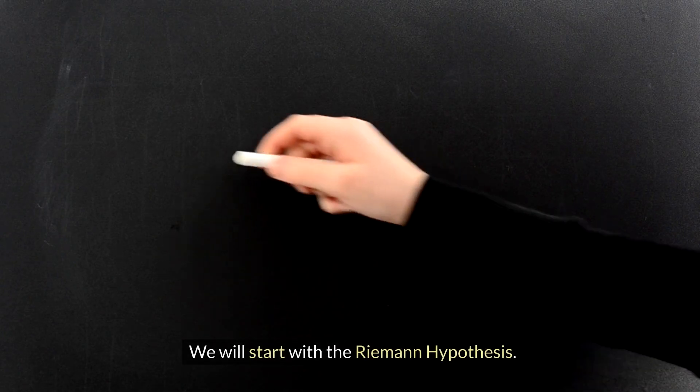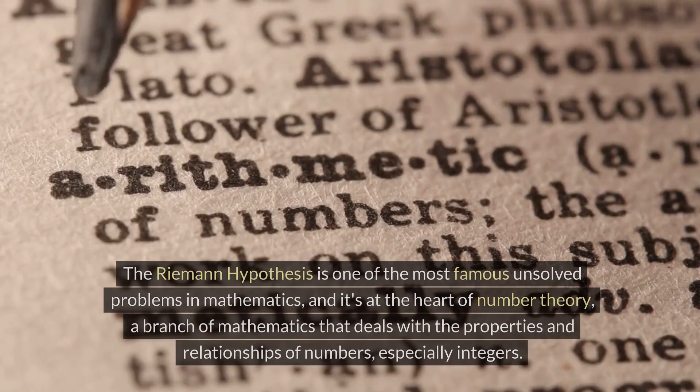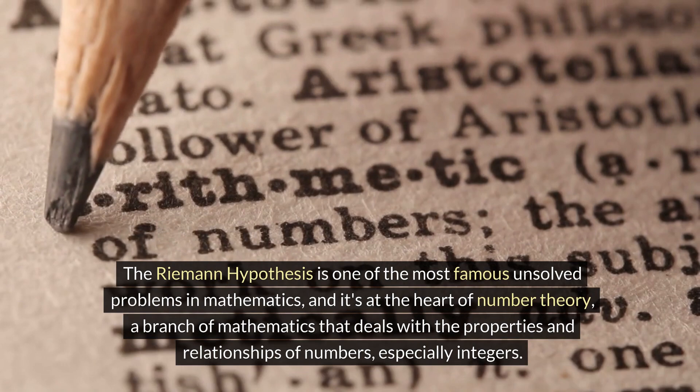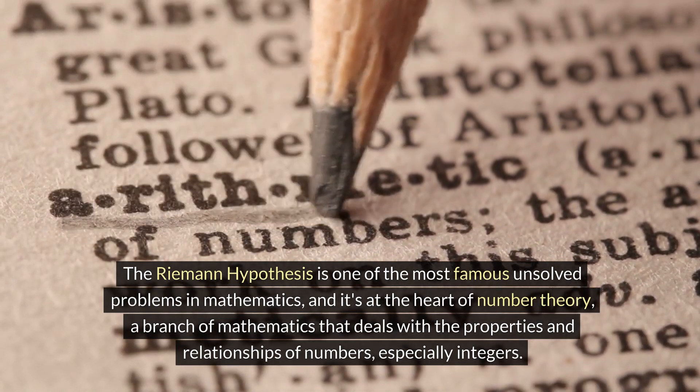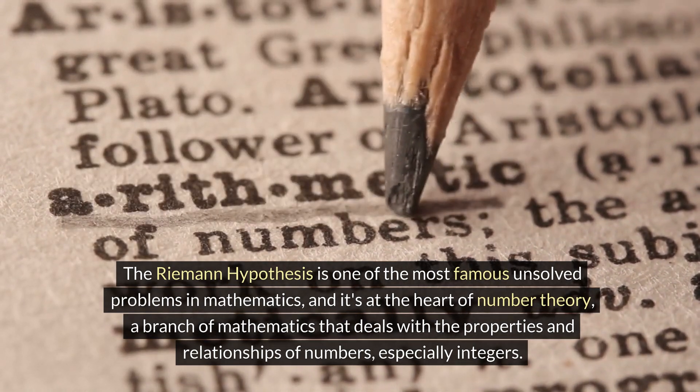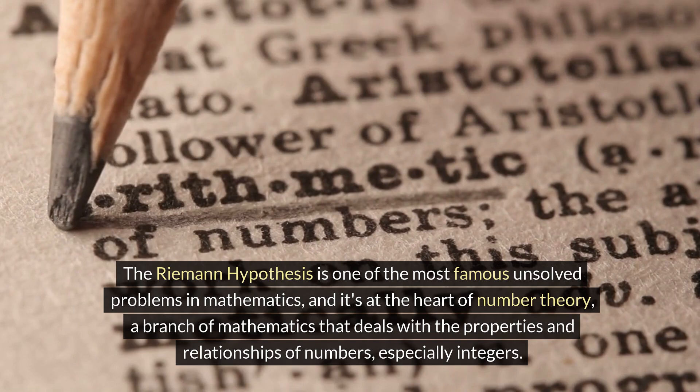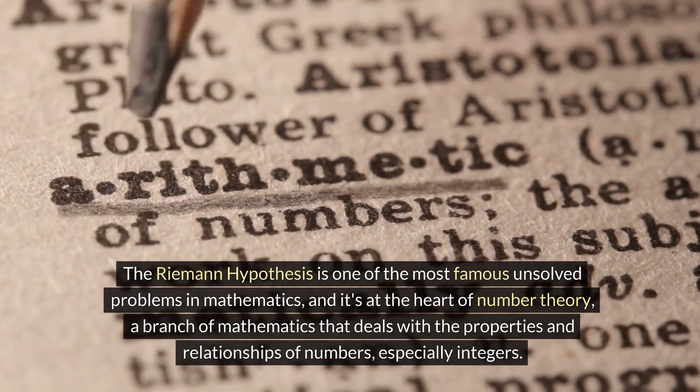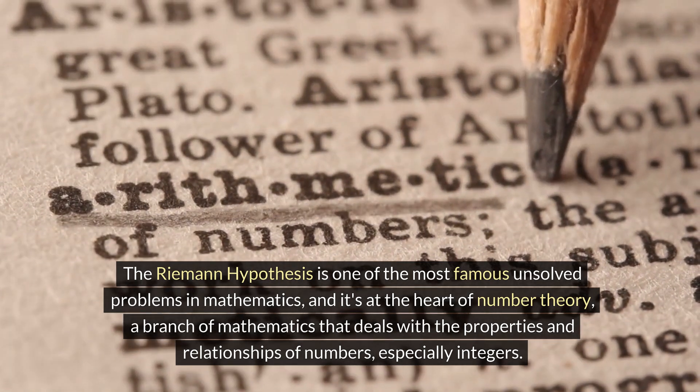We will start with the Riemann hypothesis. The Riemann hypothesis is one of the most famous unsolved problems in mathematics and it's at the heart of number theory, a branch of mathematics that deals with the properties and relationships of numbers, especially integers.